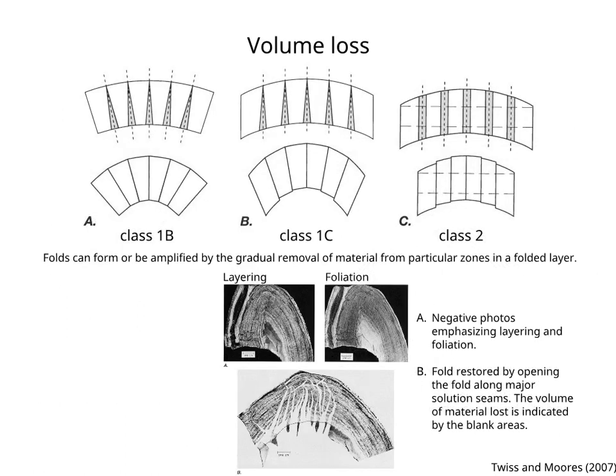Volume loss flexure involves the formation of class 1B folds by the gradual removal of rock material from particular zones in a folded layer. Notice that this process can also form other types of folds, such as class 1C and 2 folds. The lower figure in section A